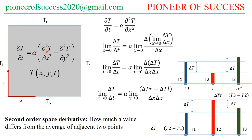In order to understand it physically, I have cut down the equation to one dimension with respect to space and one dimension with respect to time. We have omitted the other spatial derivative, considering only one spatial dimension. Now we will apply the fundamental concept of derivative: del T / del t is equal to the limit as delta t tends to zero of the difference operator on temperature divided by the difference in time.